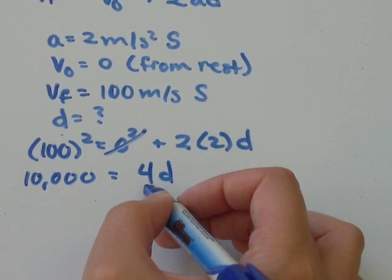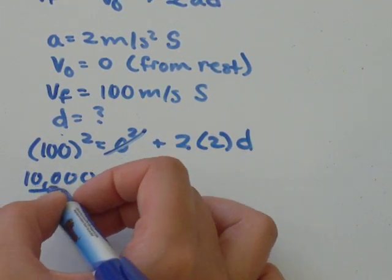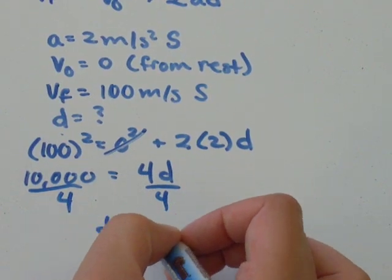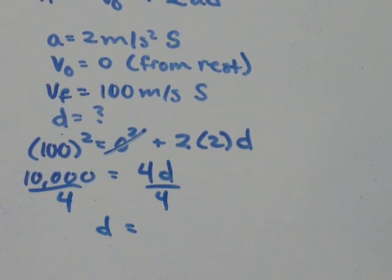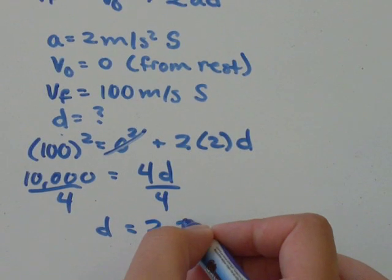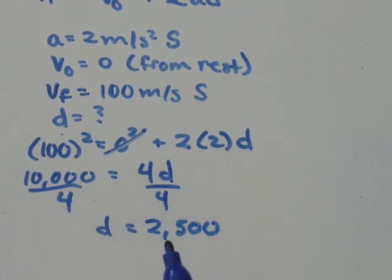So to solve for D, I'm just going to divide by 4 on both sides. And 10,000 divided by 4 is equal to 2,500.